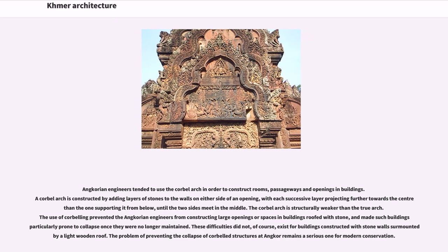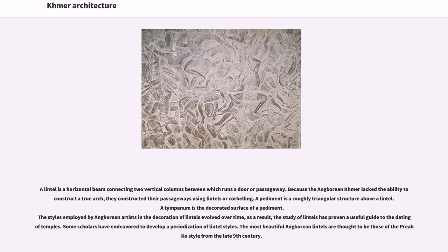The corbel arch is structurally weaker than the true arch. The use of corbeling prevented Angkorian engineers from constructing large openings or spaces in buildings roofed with stone, and made such buildings particularly prone to collapse once no longer maintained. These difficulties did not exist for buildings with stone walls surmounted by a light wooden roof. The problem of preventing the collapse of corbeled structures at Angkor remains a serious one for modern conservation. A lintel is a horizontal beam connecting two vertical columns between which runs a door or passageway. Because the Angkorian Khmer lacked the ability to construct a true arch, they constructed passageways using lintels or corbeling. The styles employed by Angkorian artists in the decoration of lintels evolved over time; the most beautiful Angkorian lintels are thought to be those of the Preah Ko style from the late 9th century.